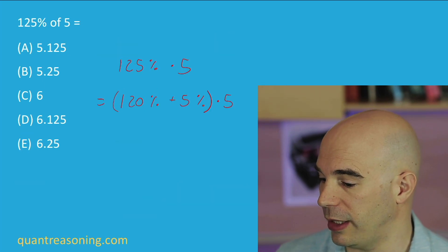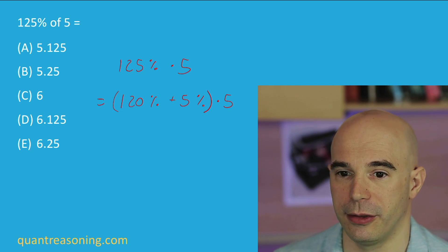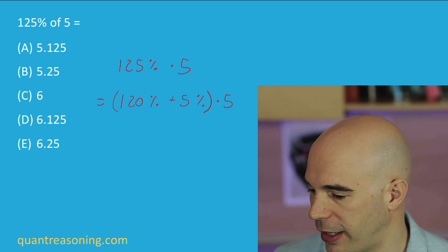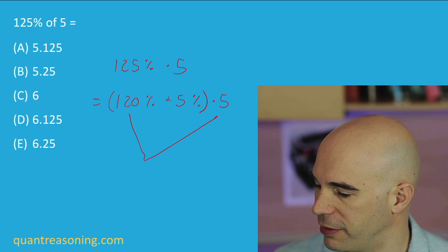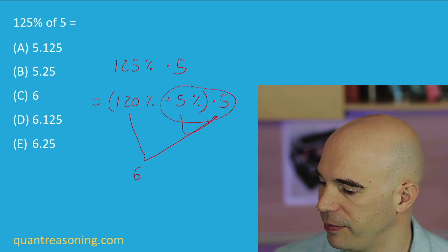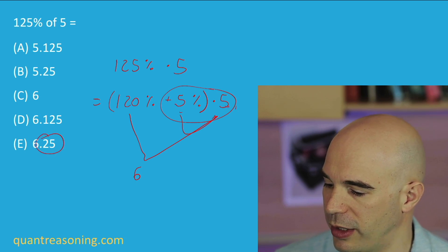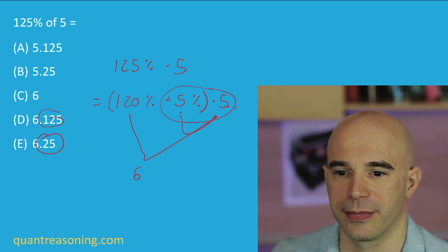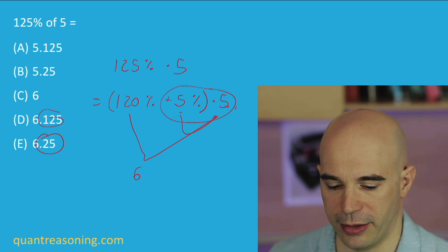And just to go back to what David was describing, you essentially thought of it this way, David. You were like, well, 125 is 120 plus 5. And you correctly said 120% of 5 is 6. Then you just have to ask yourself, well, what's 5% of 5? And if you multiply 5 times 5, you get 25, not 125. So that could have taken you all the way to the end there.